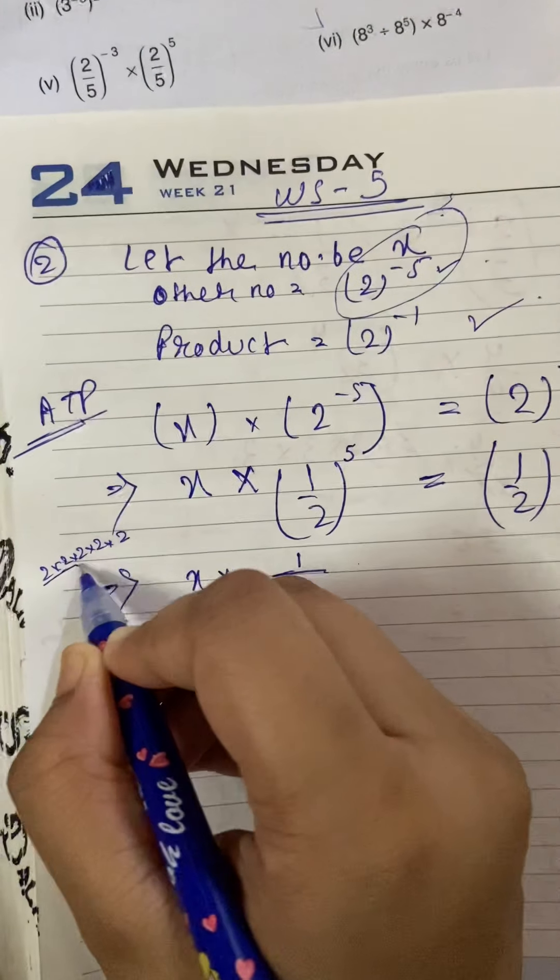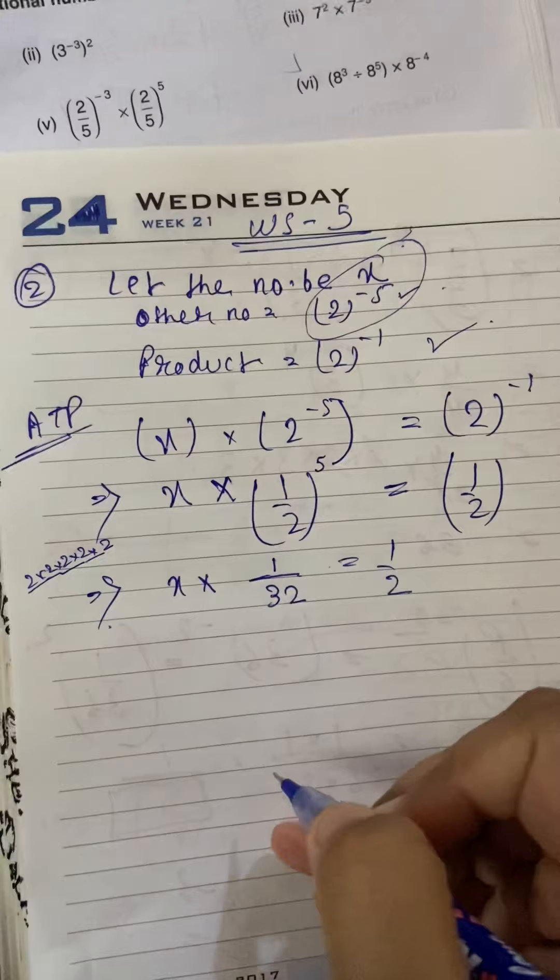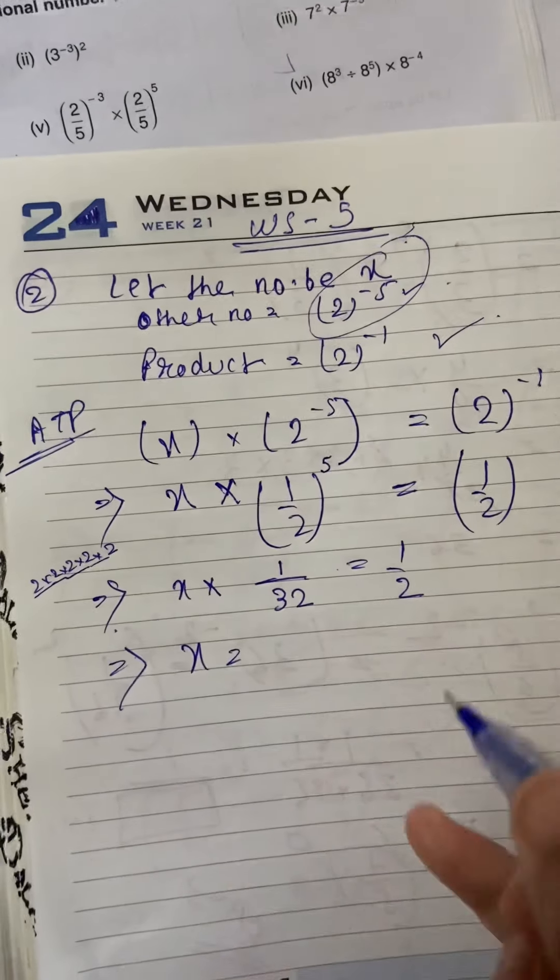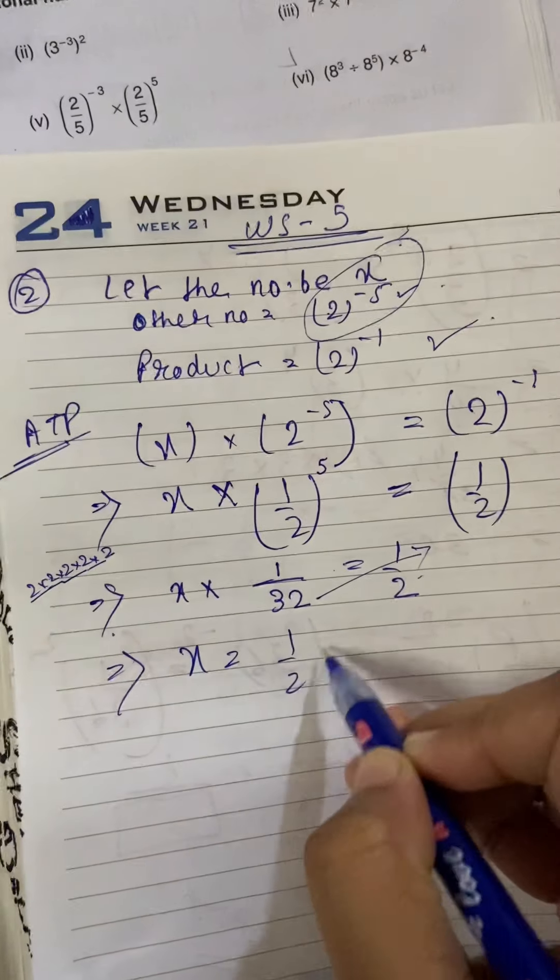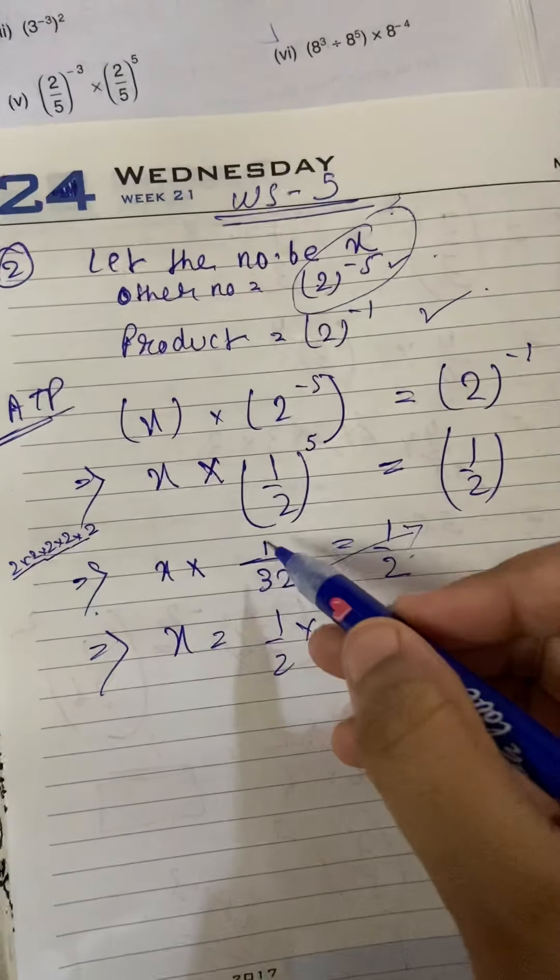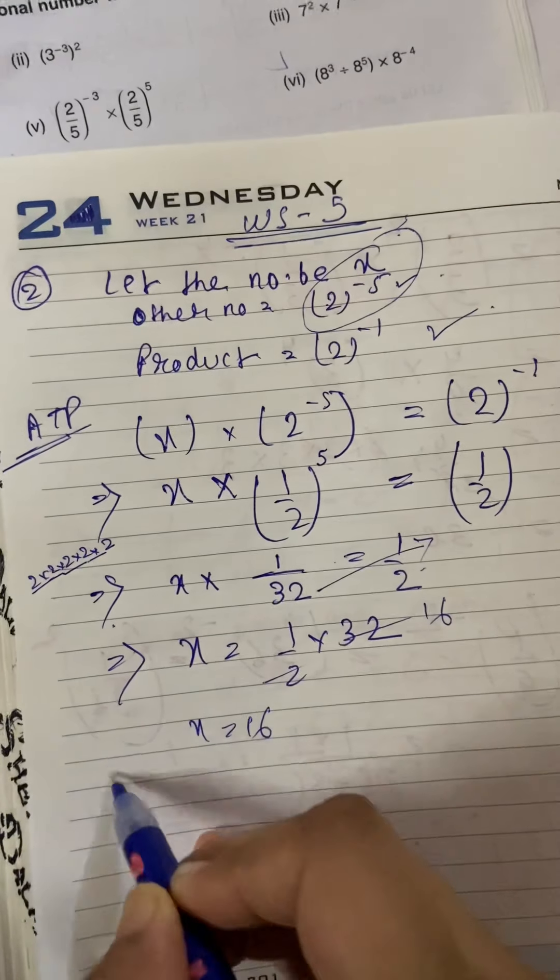Aur yye 1 by 2 ho jayega. Power 1 liknye ka zharat nahi hai. Ab kya souchna hai? Ki x equals to 1 by 2 into 2 into 2 into 2 is tarah se. 5 bar karenghe. 2 into 2 is 4, 4 into 2 is 8, 8 into 2 is 16, 16 into 2 is 32. So x equals to kya ho ga? Voh to upar me hi rahae ga 32. Numerator me chala jayega. 1 niche jayega. X equals to 16.